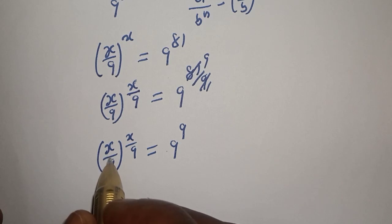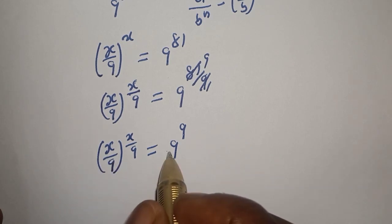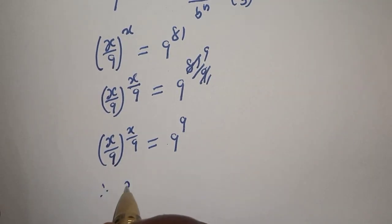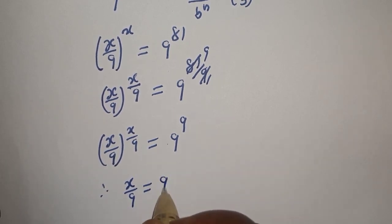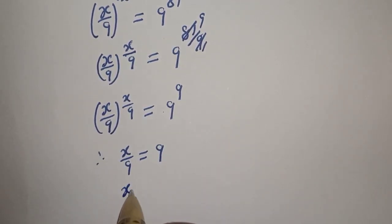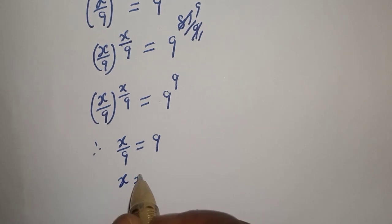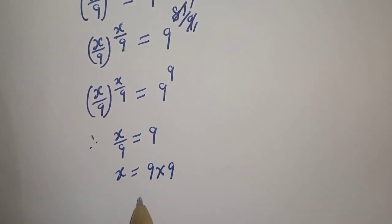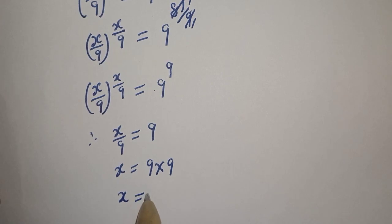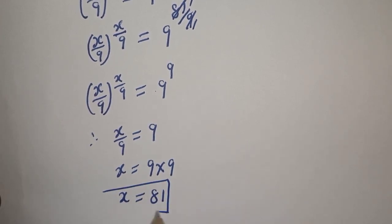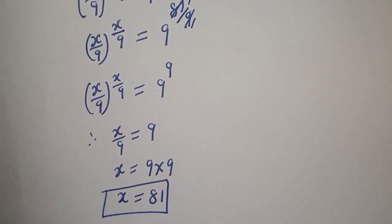From here, the base is equal to 9 and the exponent is equal to 9. Therefore, S over 9 is equal to 9. Cross multiplying, S is equal to 9 multiplied by 9, so S is equal to 81. This is the final answer.